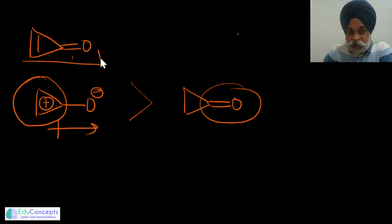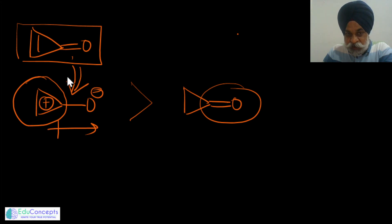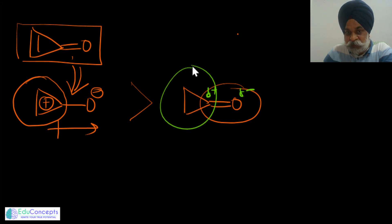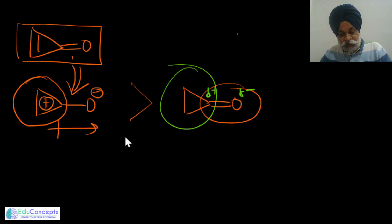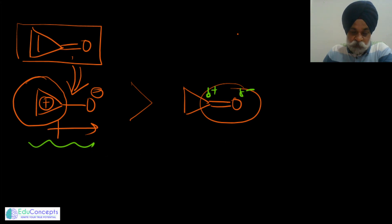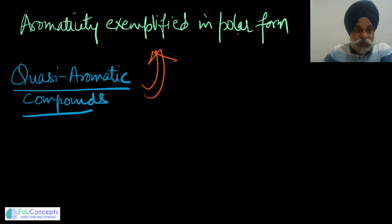This compound predominantly exists in the polarized form. There is a clear positive-negative charge separation happening, so its dipole moment must be much greater compared to the other compound with just a pi bond. The other compound has some polarity, but the dipole moment of the first entity is greater than the second. The problem asks for the order of dipole moment — this statement appears correct.